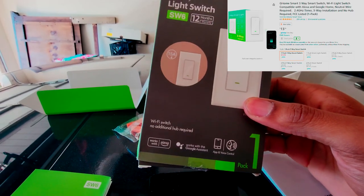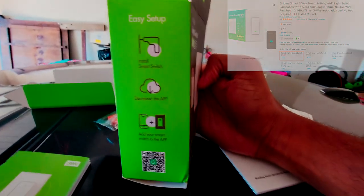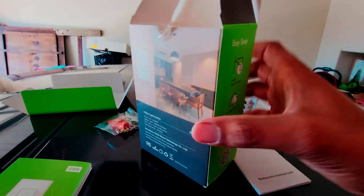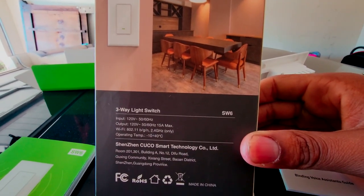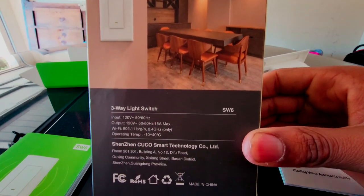So it is pretty quick and easy. You're going to install the switch, download the app, and then you're pretty much done. Your model number again is SW6. This is only for 2.4 gigahertz Wi-Fi.